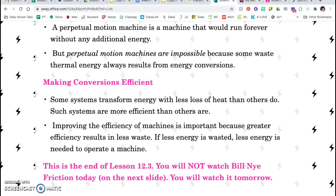I said just a minute ago we had made light bulbs more efficient so they don't let off as much thermal energy. We are constantly trying to improve the efficiency of machines, and this is important because greater efficiency results in less waste. If less energy is wasted, then less energy is needed to operate that machine.